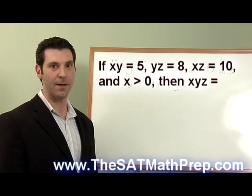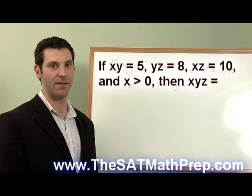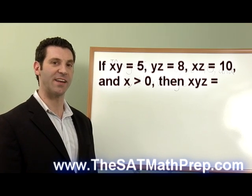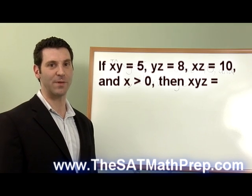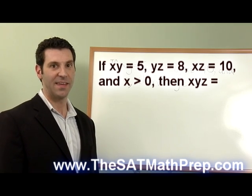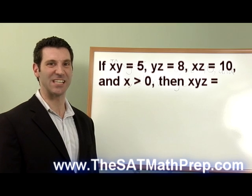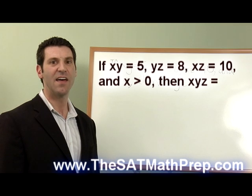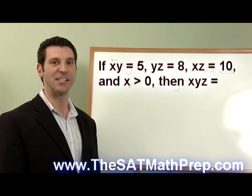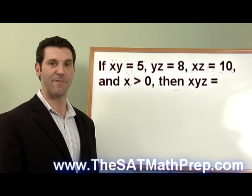The trick is to apply a simple operation. By a simple operation, I mean either addition, subtraction, multiplication, or division. In this question, since the expression we're trying to find is a product, x times y times z, the most likely candidate is multiplication, and in fact, that's what we're going to use.